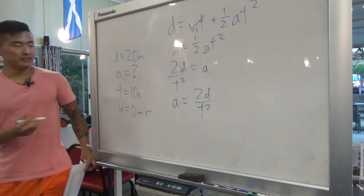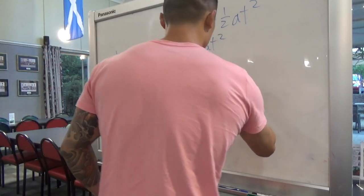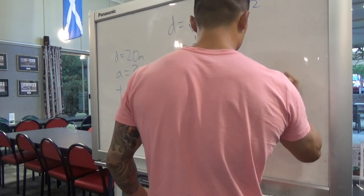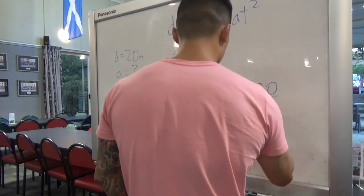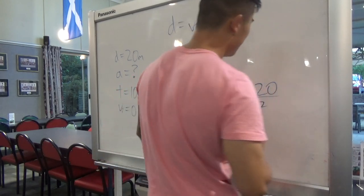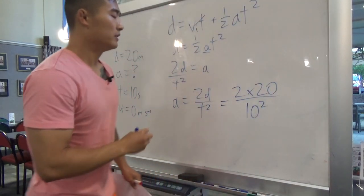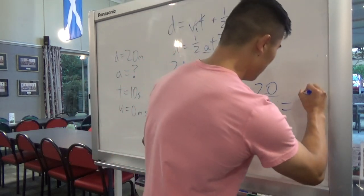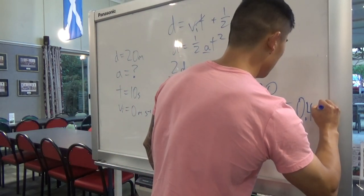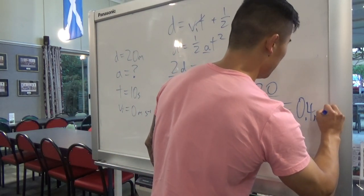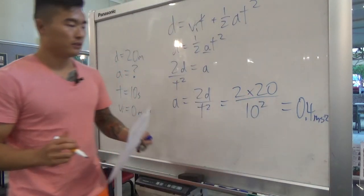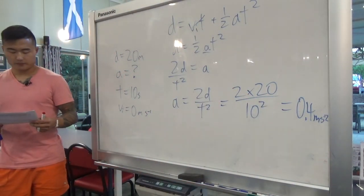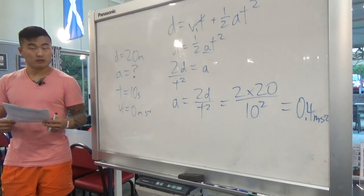Substituting the numbers: 2 times 20 meters over 10 squared. That gives you 0.4 meters per second squared.